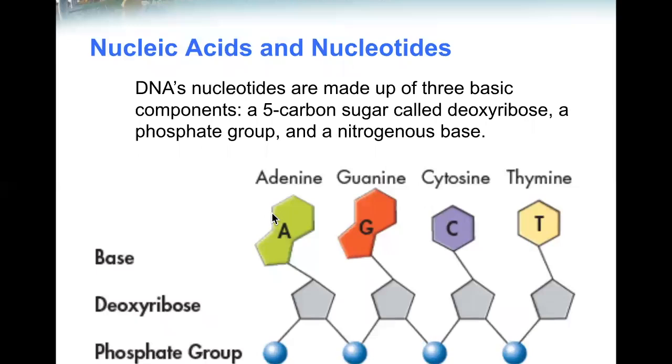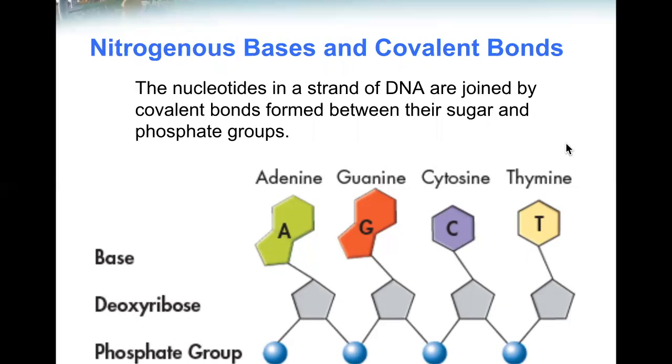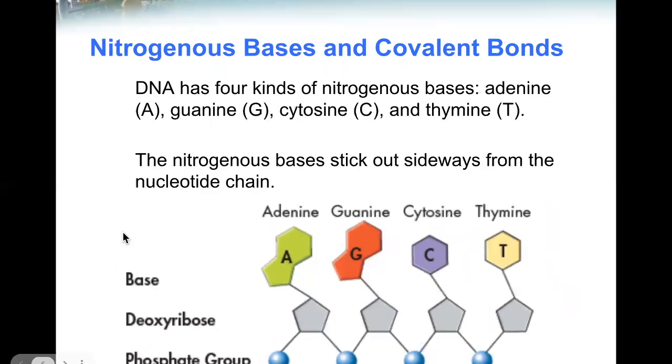The four nitrogenous bases for DNA are adenine, guanine, cytosine, and thymine. The nucleotides in a strand of DNA are joined by covalent bonds formed between their sugar and phosphate groups. DNA has four kinds of nitrogenous bases: adenine, guanine, cytosine, and thymine. The nitrogenous bases stick out sideways from the nucleotide chain.